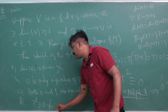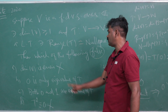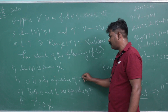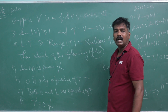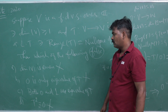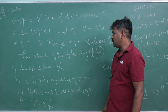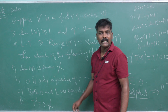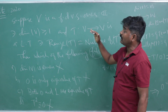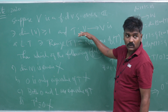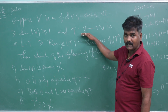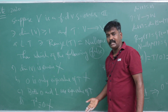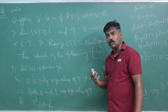Since T is nilpotent and 0 is the only eigenvalue, the statement 'both 0 and 1 are eigenvalues of T' is false. That is the false statement we are looking for.